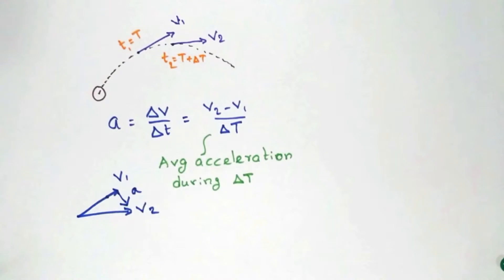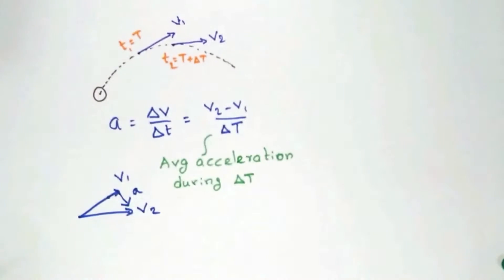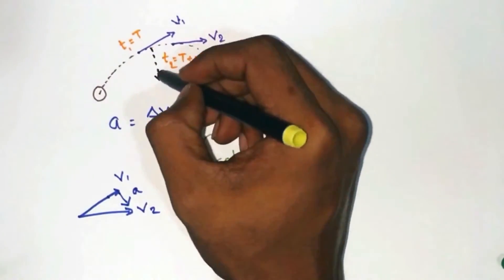We can find the instantaneous acceleration by using the formula a equals dv by dt. And if the magnitude of velocity is constant, then the acceleration will be only because of the change in direction of the velocity. And in such cases of uniform velocity, the acceleration will be directed along the normal to the curve.